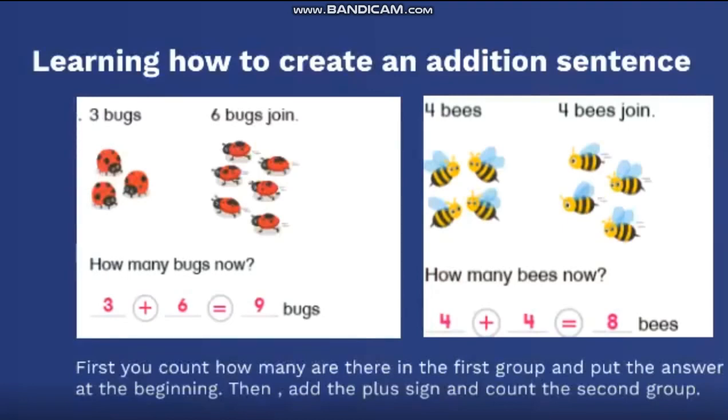Six bugs. Right? So, I need to write three plus six equals. Let me count. Three in my mind. Then four, five, six, seven, eight, nine. Excellent. I have nine bugs in all.